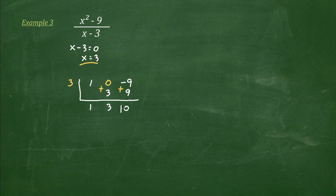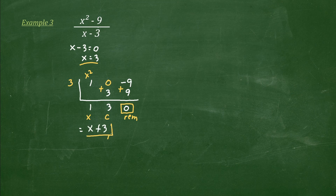Again, as you can see, our remainder here is 0, which means the answer is exact. Meanwhile, let's look at our literal coefficients. We have here x squared — therefore this is 1 less degree, therefore this is x. And this is our constant. Finally, our answer is x plus 3. So that is our answer.